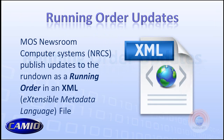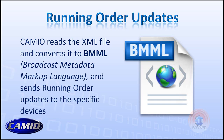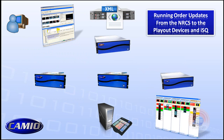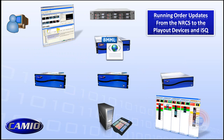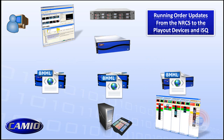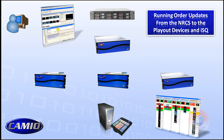Running order updates happen when graphics and other items are requested throughout the show and changes are made. By default, newsroom systems generate an XML file — a list of running order items requested for that particular rundown. Those are passed to the Cameo server, which creates BMML — Broadcast Metadata Markup Language — Chiron's own version of XML for managing the playlist. When the journalist changes the order of the script, that goes through the newsroom system, an XML file is generated and passed to Cameo. Cameo converts it to BMML format, parses it, and creates a separate BMML file for each playout device used in the production. That gets published to the playout devices, and the ISQ controller — or any other controller — will find that BMML update and manage it, which is how running order updates happen on the playback controllers.